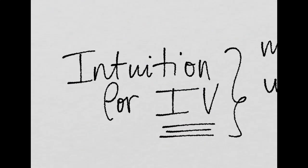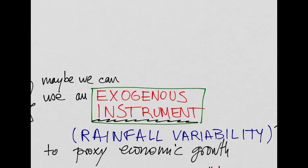Now, the authors find a way to solve this problem. They basically use a technique known as instrumental variables. And the basic intuition is as follows. Maybe we can use an exogenous variable, for example, rainfall, to proxy economic growth.